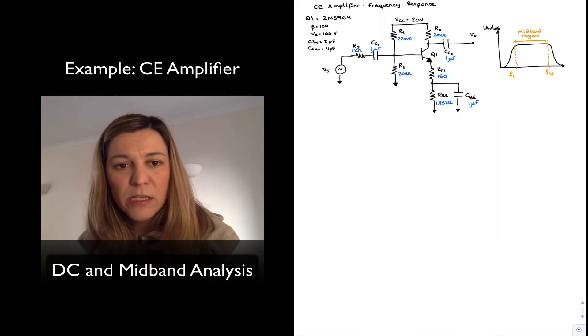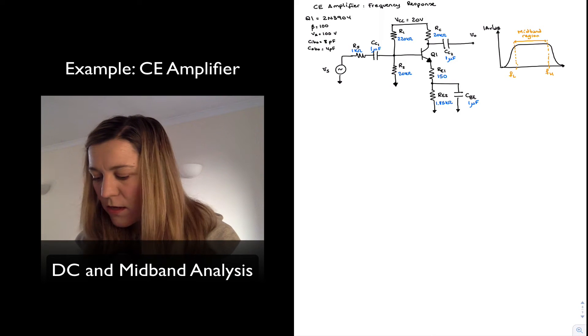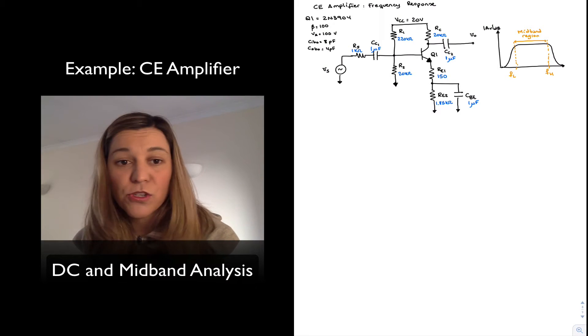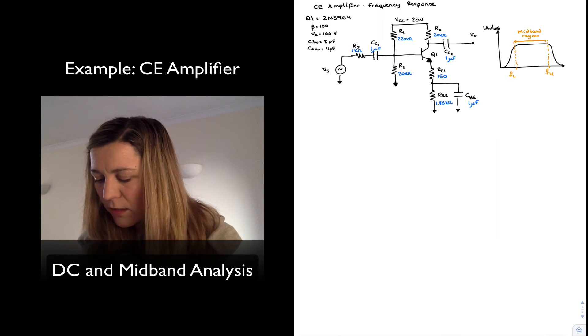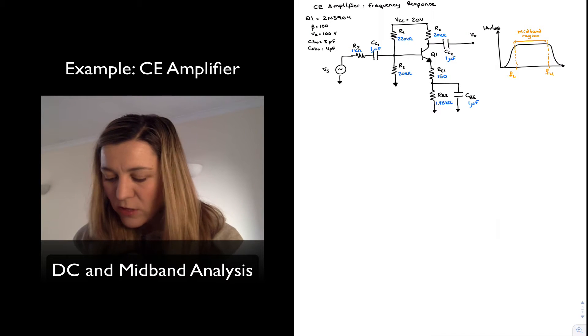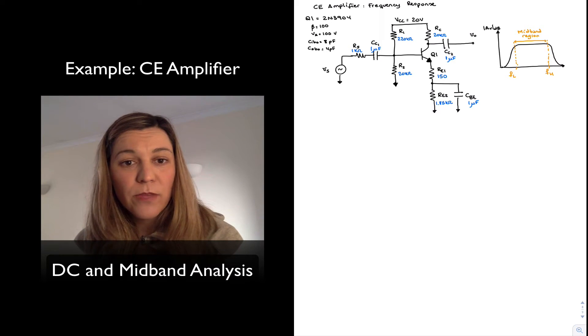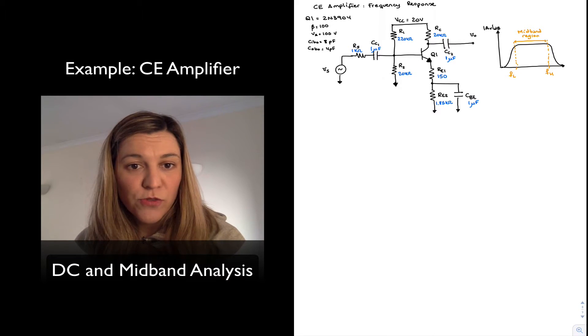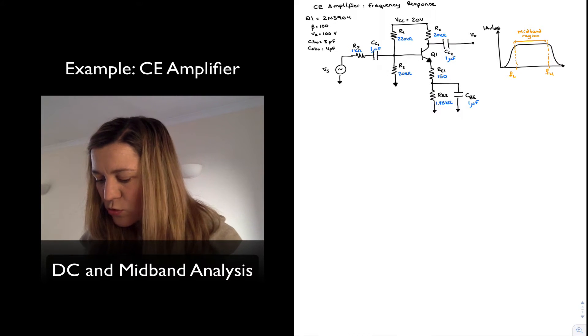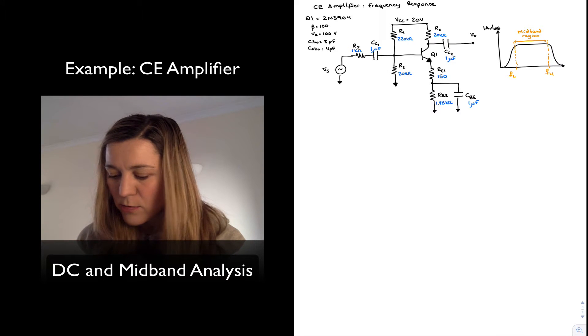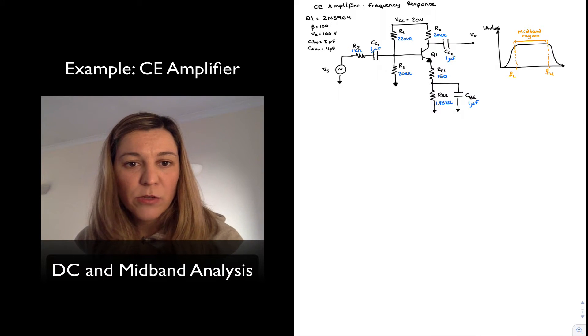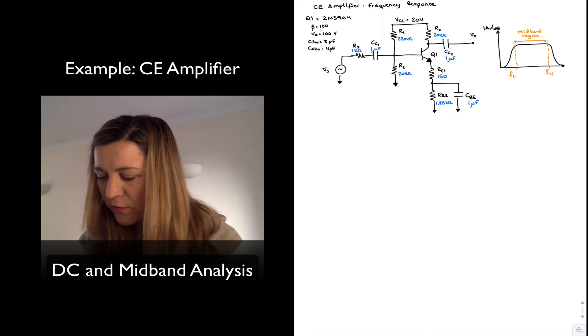And then RE is partially bypassed with bypass capacitor CBE. Another thing I've included is the RS resistor that's meant to model the resistance of the signal source VS, the series resistance of the source. And then I am using a single power supply of 20 volts for VCC.